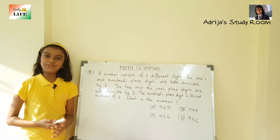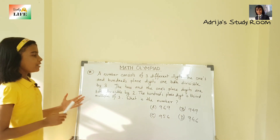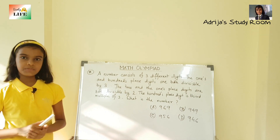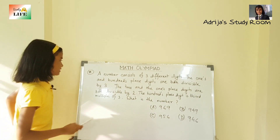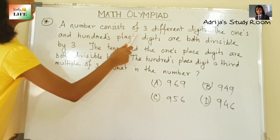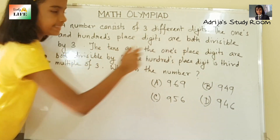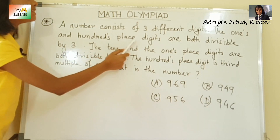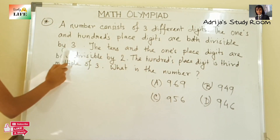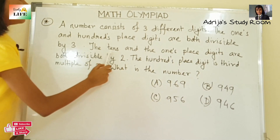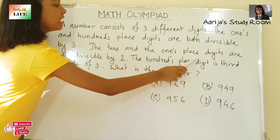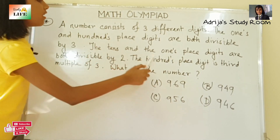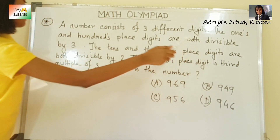Hello friends, welcome to my study room. Today we are going to discuss some Class 5 math problems. The first one is: a number consists of three different digits. The ones and hundreds place digits are both divisible by 3. The tens and the ones place digits are both divisible by 2.